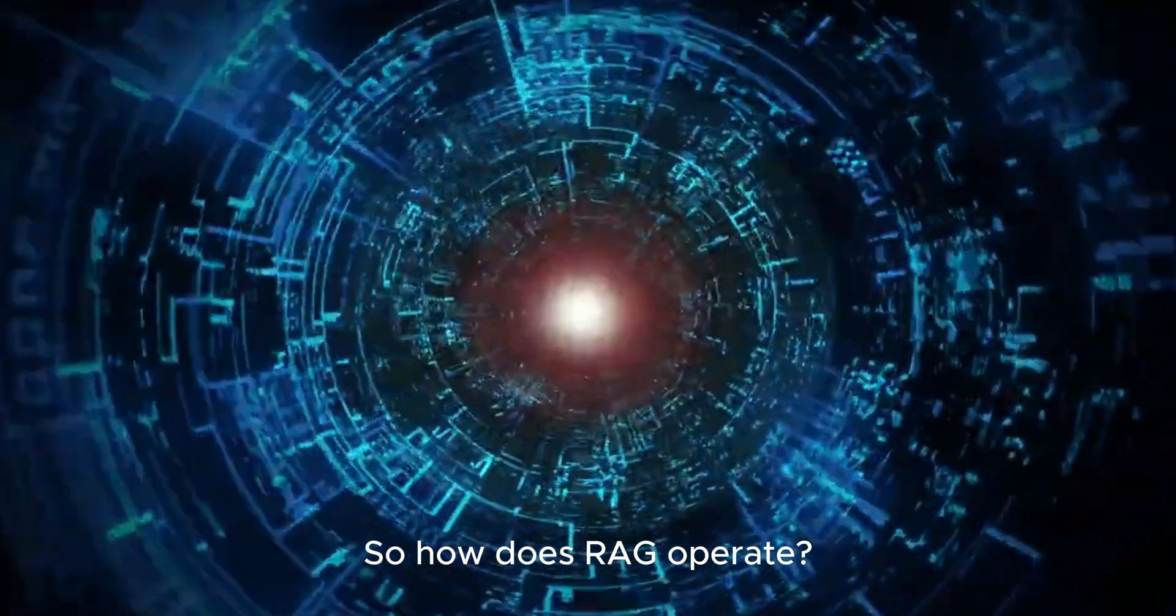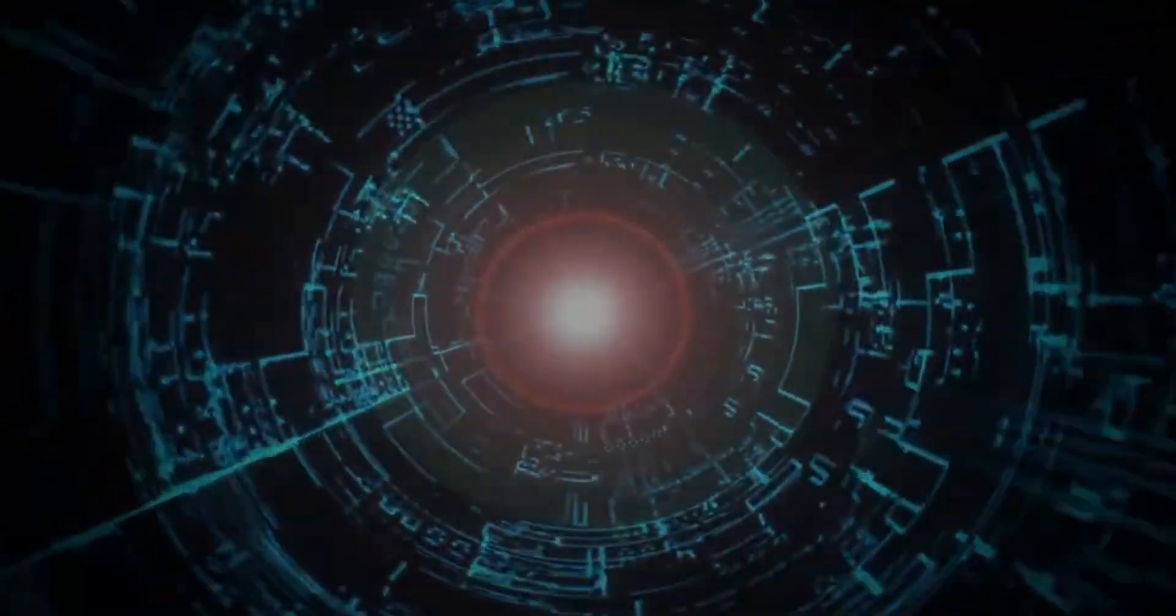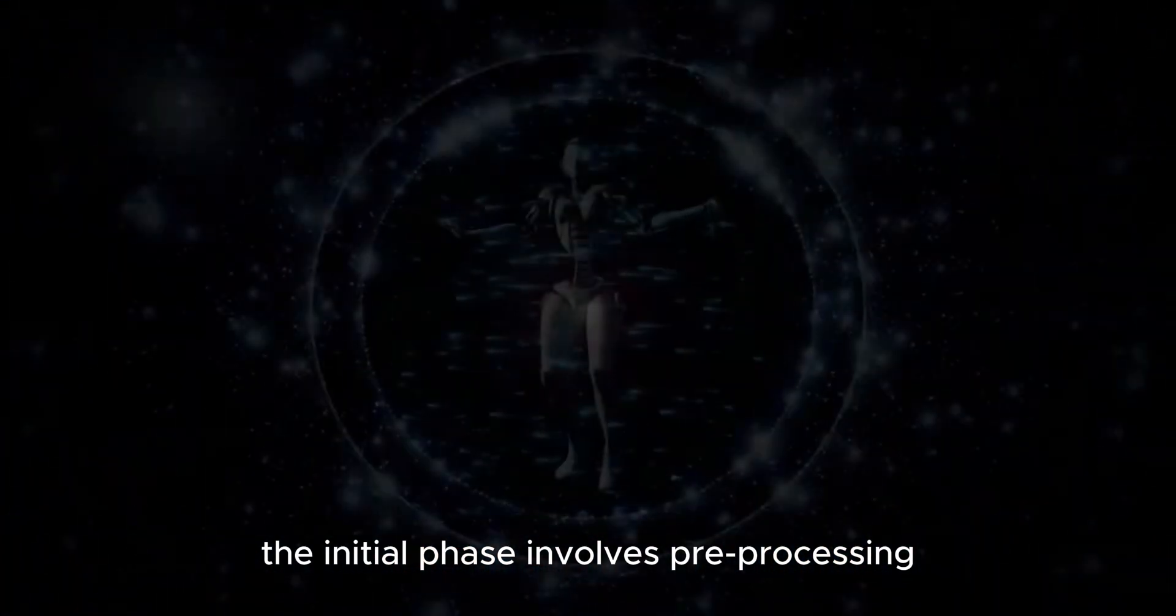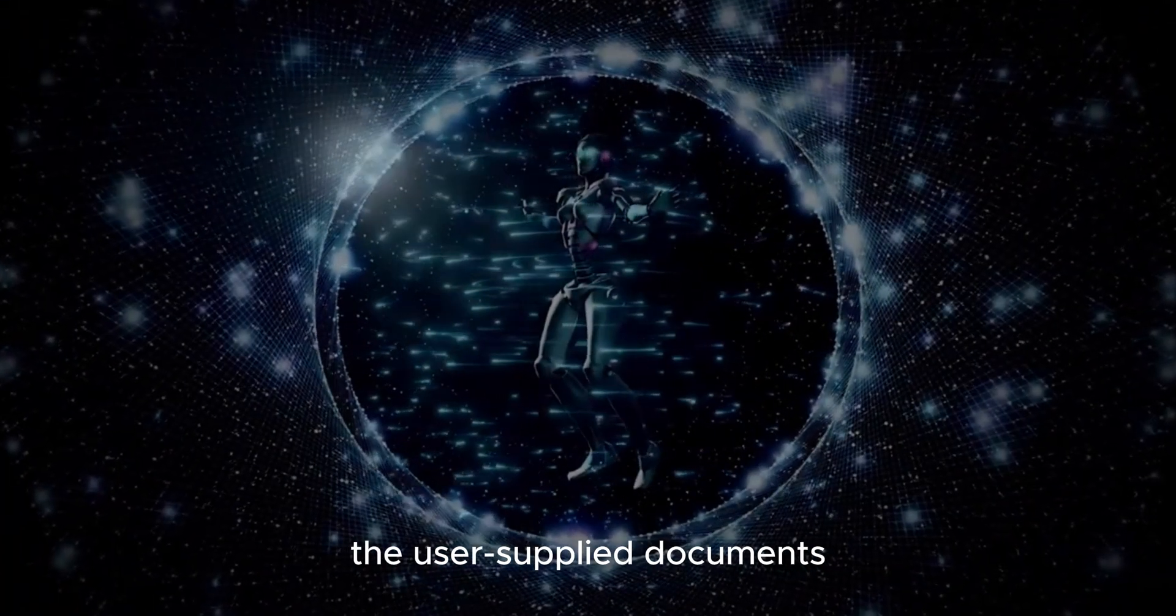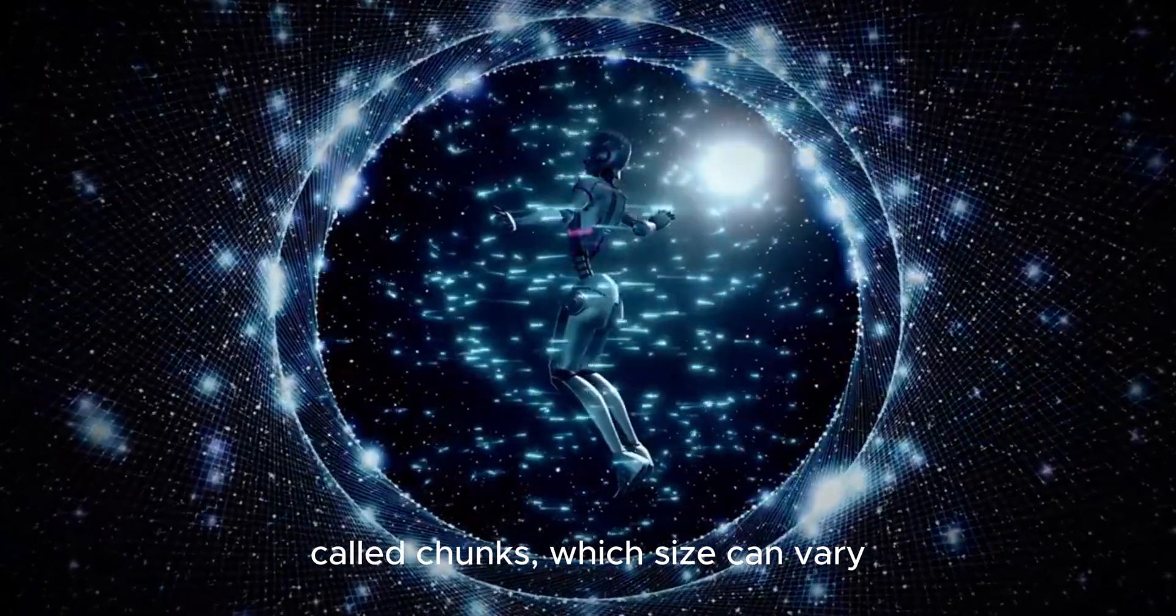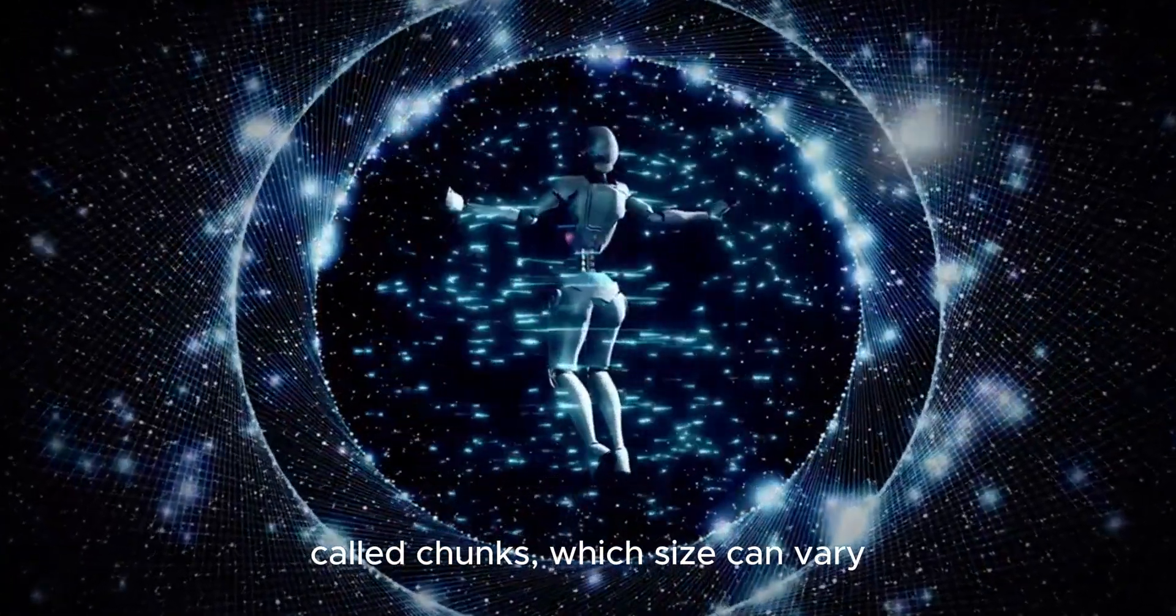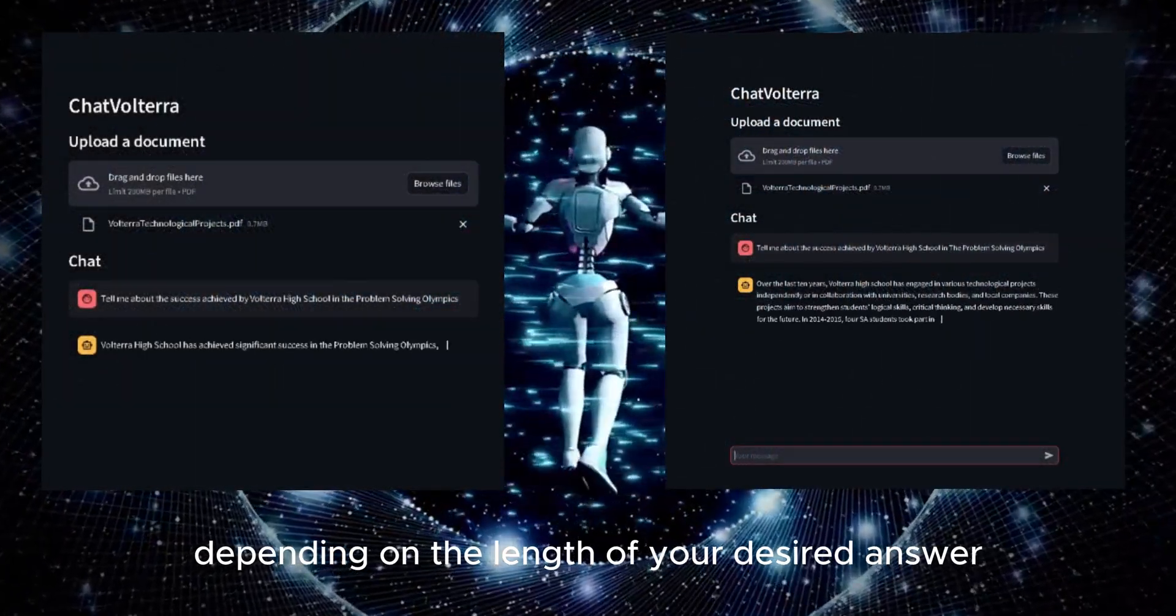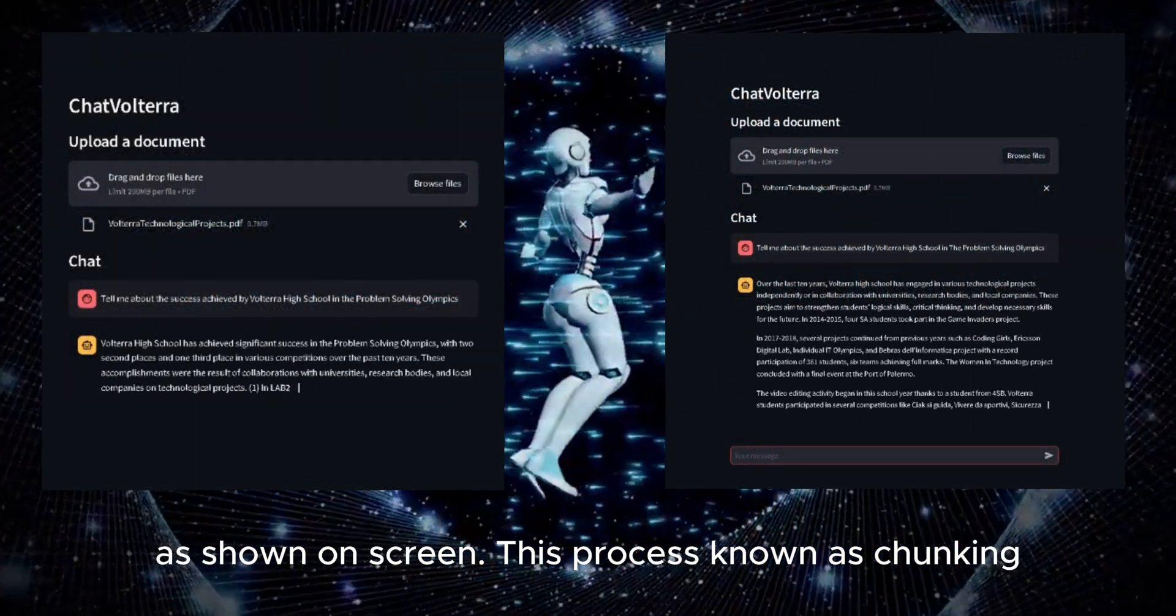So, how does RAG operate? The initial phase involves preprocessing the user's supplied documents by dividing them into manageable parts, called chunks, which size can vary depending on the length of your desired answer. This process, known as chunking,